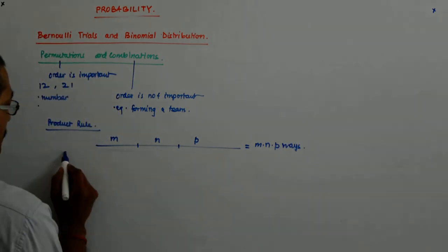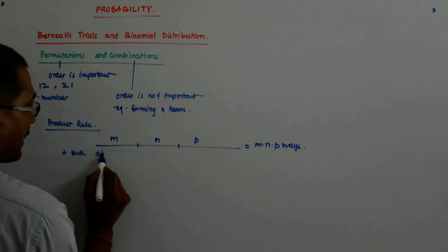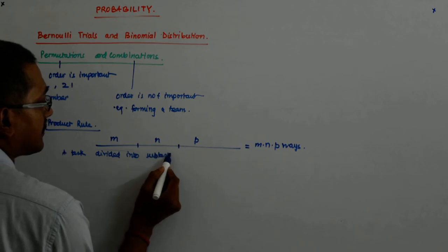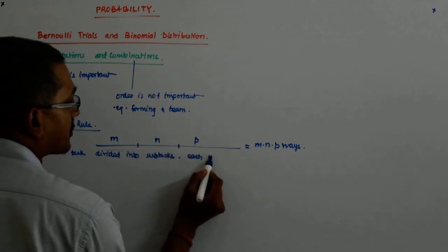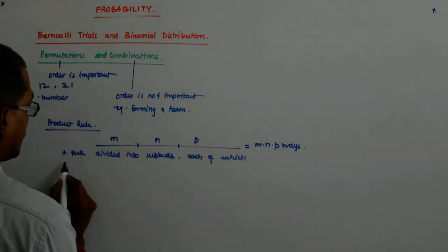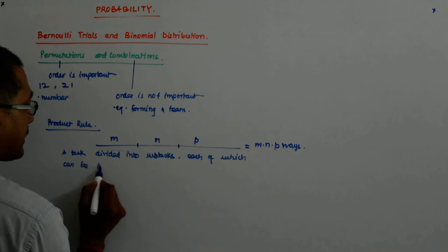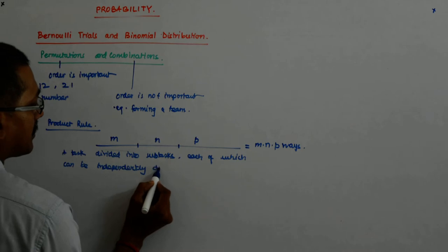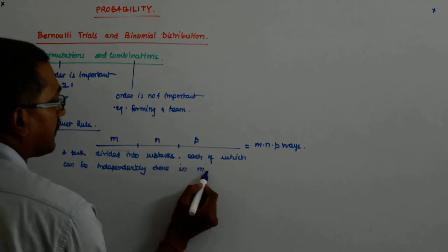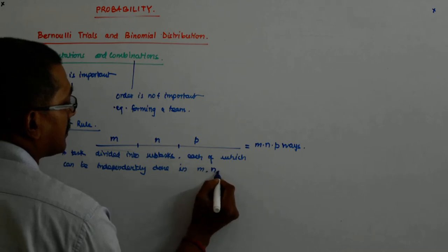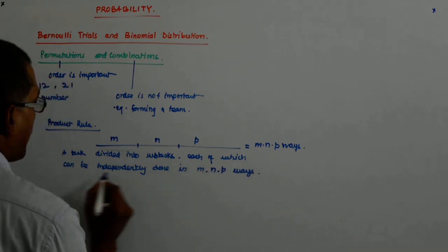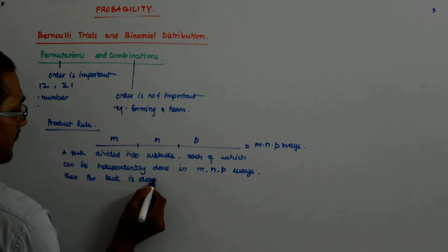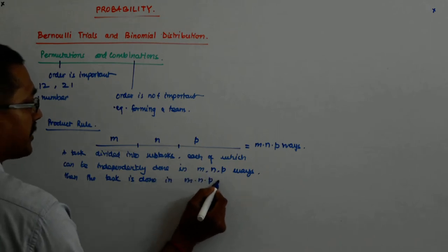So a task divided into sub-tasks, each of which can be independently done in m into n into p ways, then the task is done in m into n into p ways.